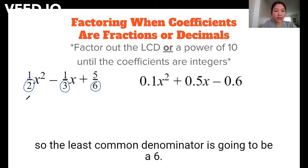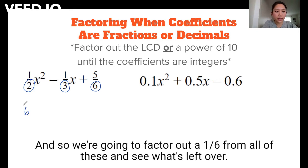So the least common denominator is going to be 6. And so we're going to factor out a 1/6 from all of these and see what's left over.